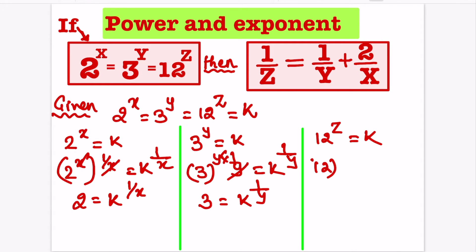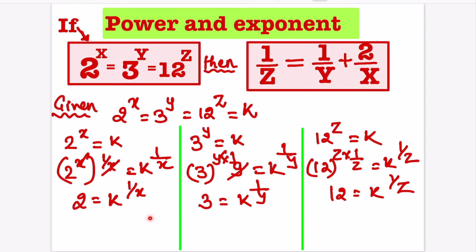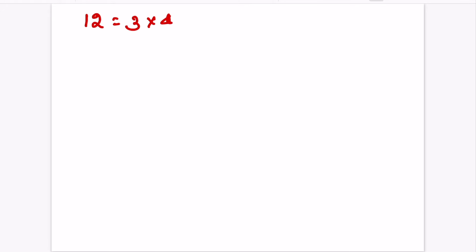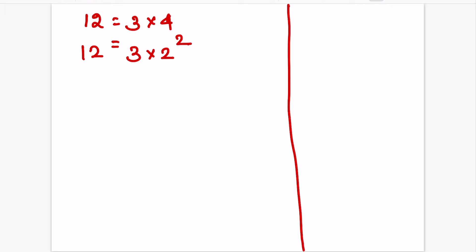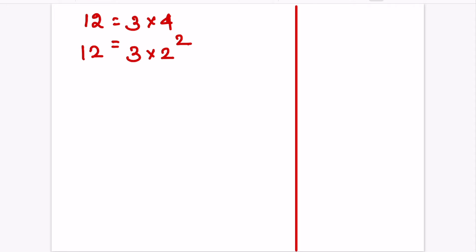12 raised to z into 1 by z is equal to k raised to 1 by z, and 12 is equal to k raised to 1 by z. Now, we can write 12 as 3 into 4, or 3 into 2 power 2 is equal to 12. Substituting the various values of 12, 3, and 2, we have 12 is equal to k raised to 1 by z.